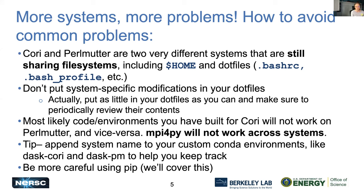If you're building custom environments, most likely you'll want to keep a separate set for Cori and Perlmutter. MPI for Py, for example, will definitely not work from one system to the other, so you'll want to maintain separate installs. One tip is to append the system name to your environment so you can keep track. And PIP can be a little more dangerous now with these shared systems, so we'll cover that.